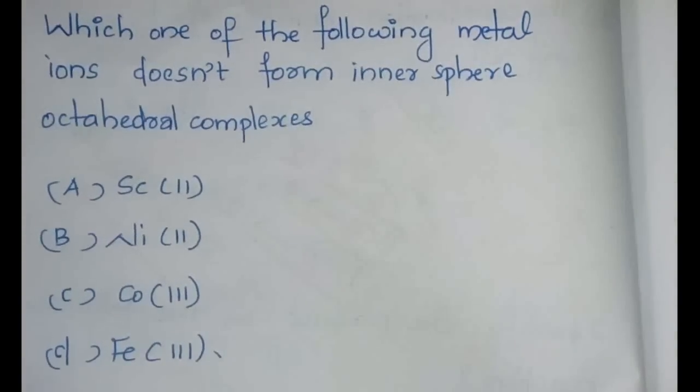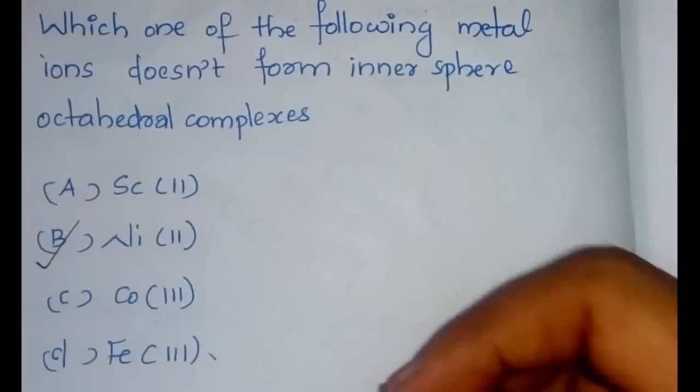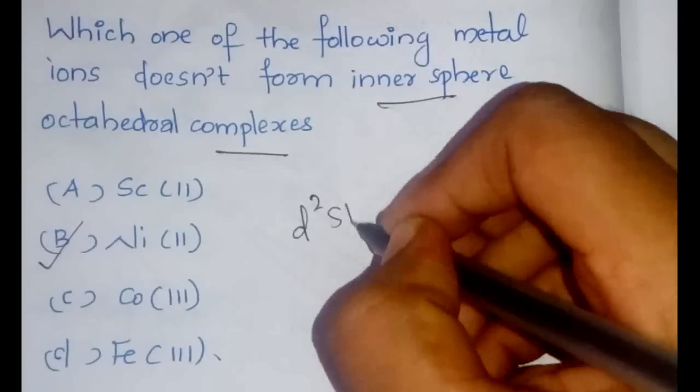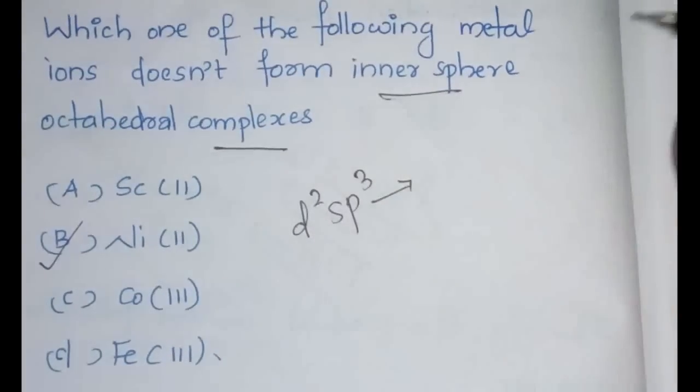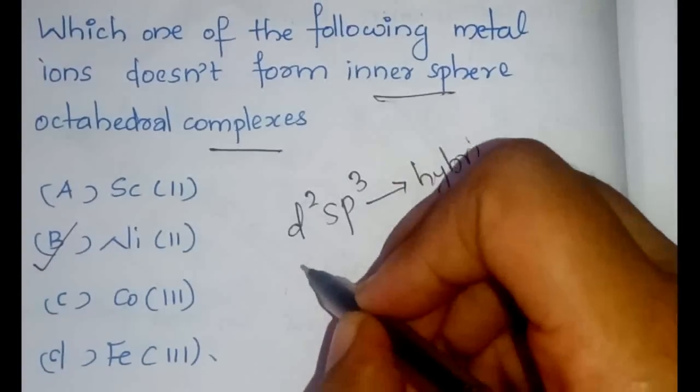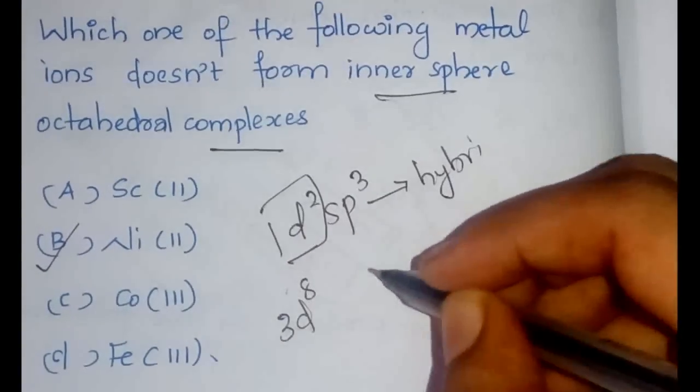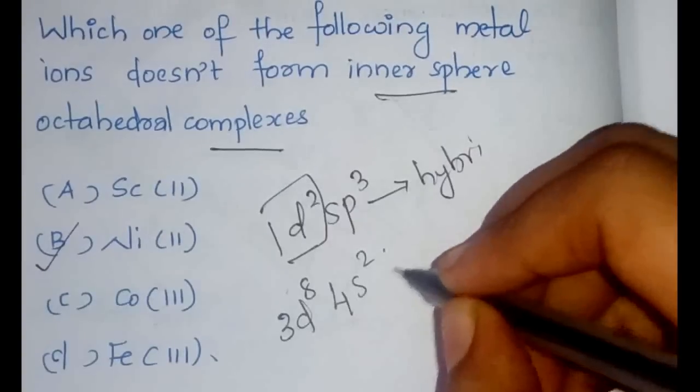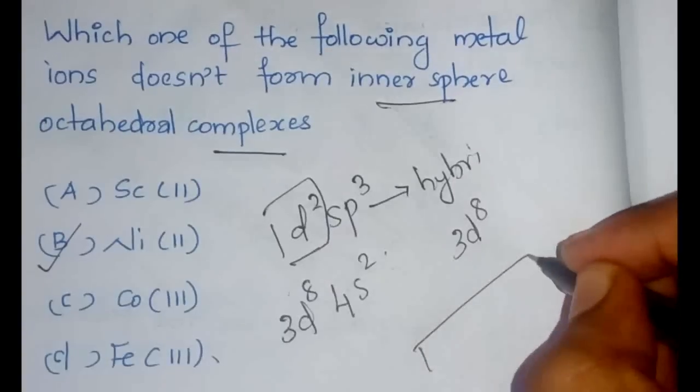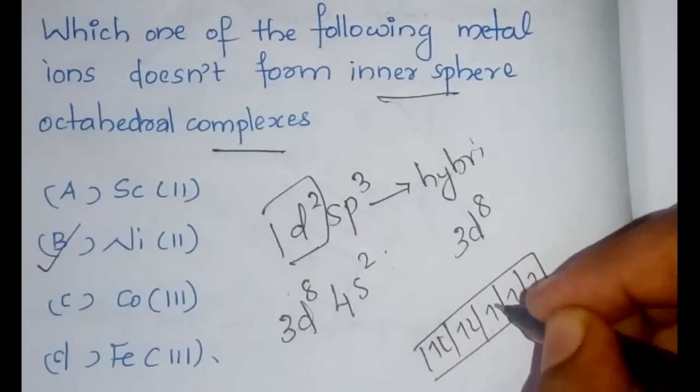Which one of the following metal ions does not form inner sphere octahedral complex? The answer is nickel. Because we need to know that in the inner sphere octahedral complexes, D2sp3 is the hybridization. We need 2 D electrons. In case of nickel what is the electronic configuration? It is 3d8 4s2. If we are filling in we can see 1, 2, 3, 4, 5, 6, 7, and 8.